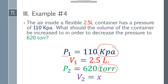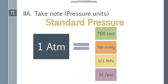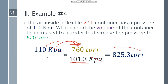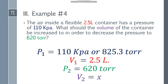Since we are finding the resulting volume, the resulting pressure and volume are partners. So we need to convert 110 kPa to torr. Using the conversion: 101.3 kPa = 760 torr. We calculate: 110 kPa × (760 torr / 101.3 kPa) = 825.3 torr. Now we have 825.3 torr for the initial pressure and 620 torr for the resulting pressure — same units.